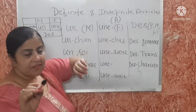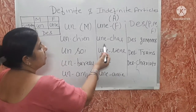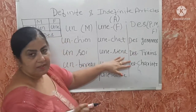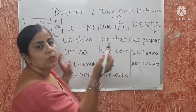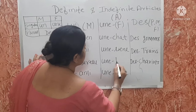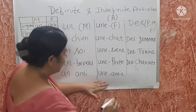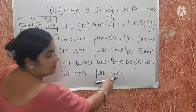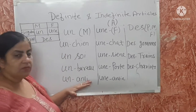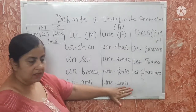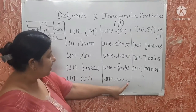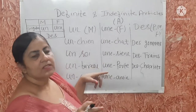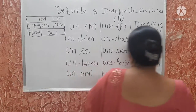Une is used with the feminine. For example, 'une chatte' — chatte is cat. 'Une reine' — reine means queen. 'Une porte'. 'Une amie' — when we write it with an E ending, it means feminine. The E ending is the identification of feminine.